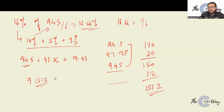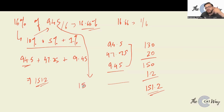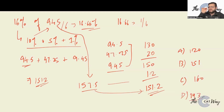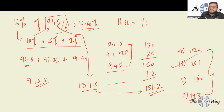Adding the decimals 0.45 + 0.25 + 0.5 gives about 1.2, so the final answer is approximately 151.2. If you had directly divided 945 by 6, you'd get very close to the same value. If the options are far apart — say 120, 151, 160, 143 — you can use direct approximation. If options are close together, use the breakdown method for precision.